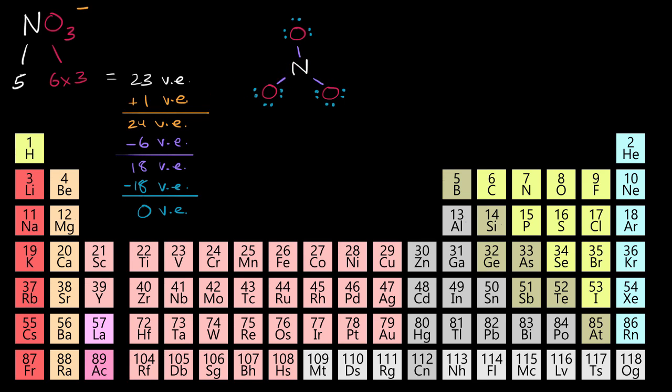One way to do that is to take one of these lone pairs from one of the oxygens and turn that into another covalent bond. So let me erase this pair and turn that into another covalent bond. And this is looking pretty good. We have eight valence electrons around each of the oxygens, and now we have eight for the nitrogen.